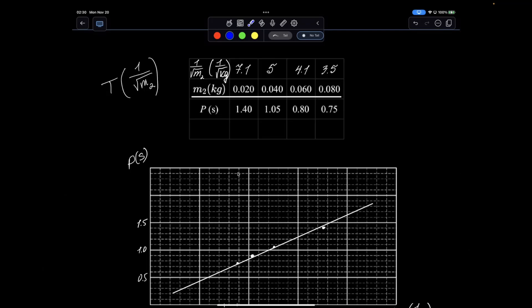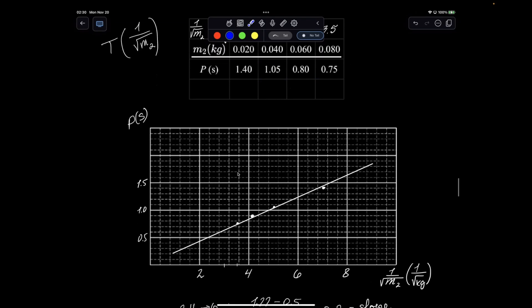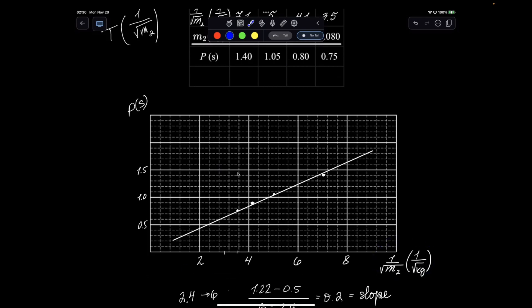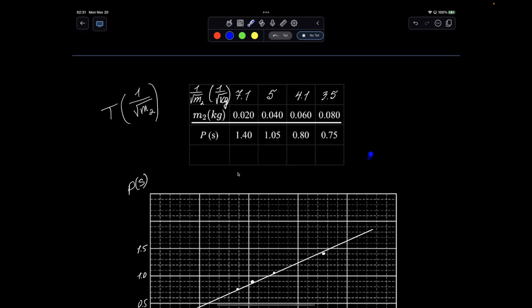All right, so I went ahead and graphed all three versions. So my first version is t versus 1 over root of m2, recalculated the values that I needed to plot, plotted them down here. So my x is 1 over m2 data table.